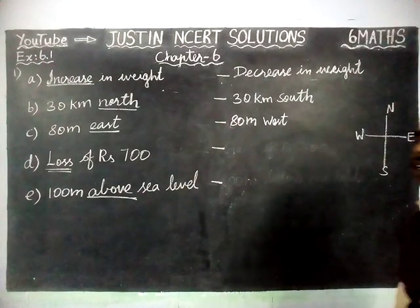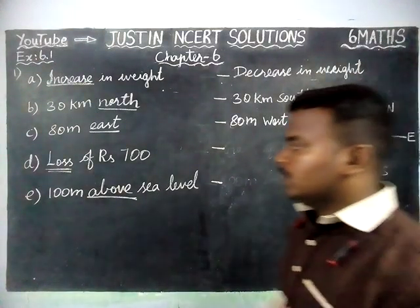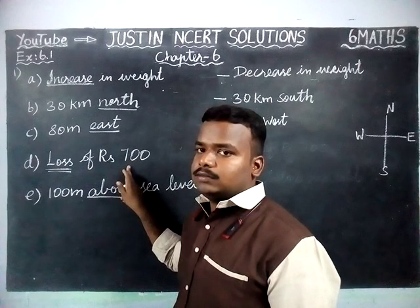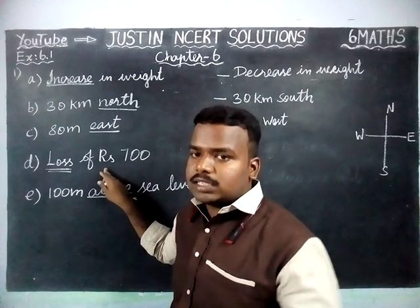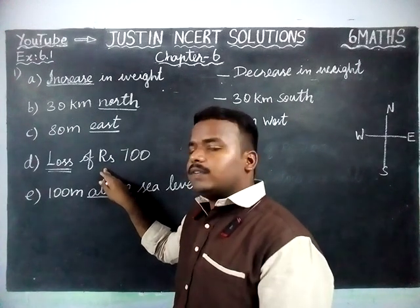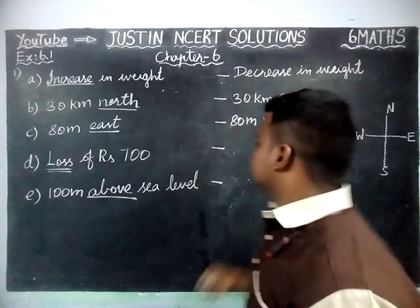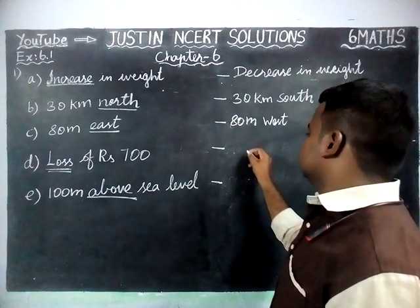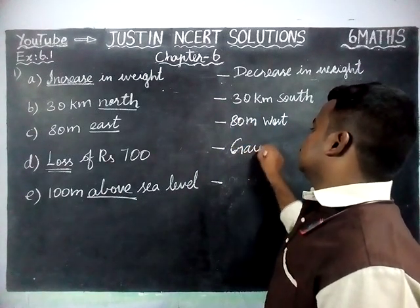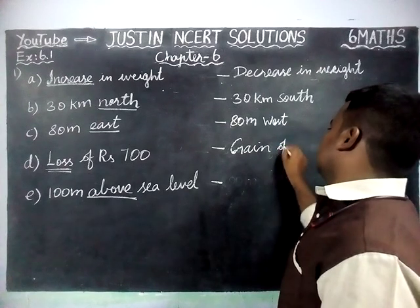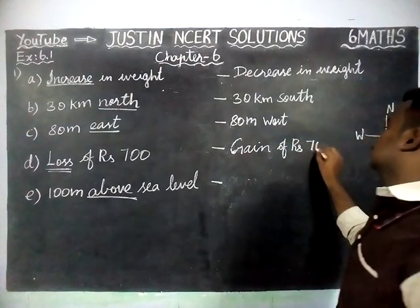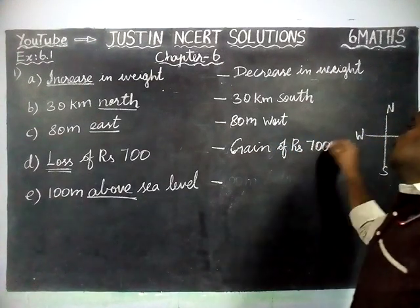Part D: loss of rupees 700. Loss means we lost that amount. So the opposite of loss is gain. The answer is: gain of rupees 700.